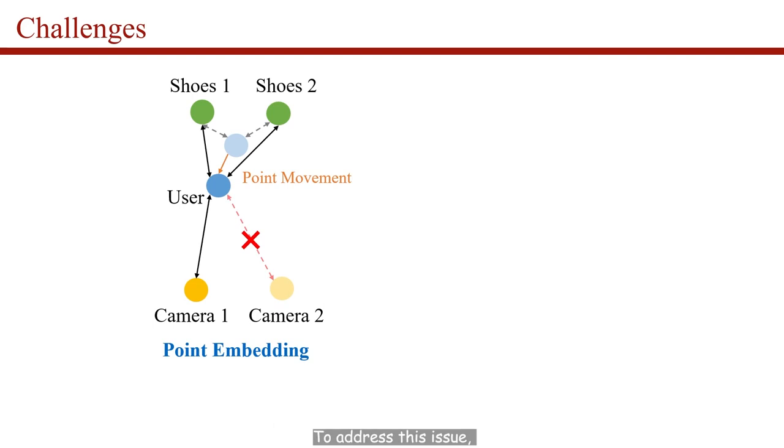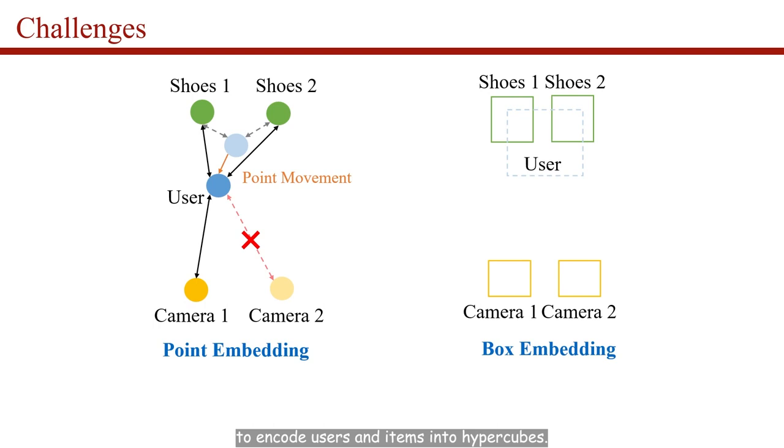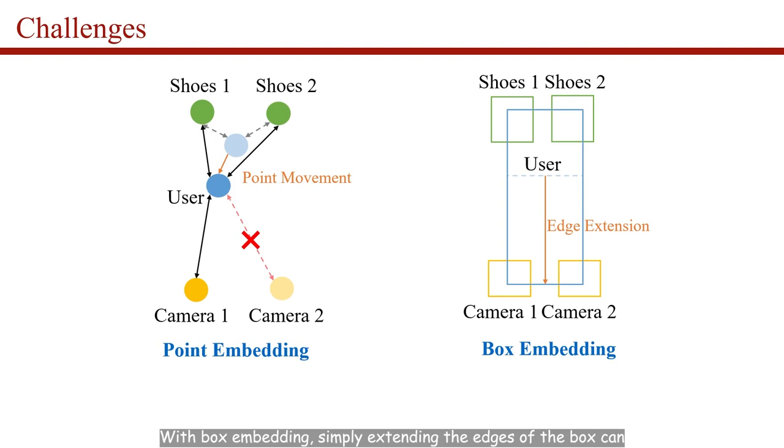To address this issue, we propose to use box embedding to encode users and items into hypercubes. With box embedding, simply extending the edges of the box can maintain the user's original interest and match camera 2 to increase recommendation diversity.